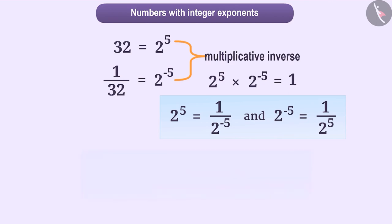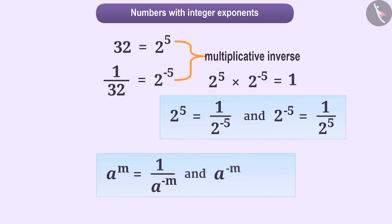Broadly, any number A to the power M can be expressed as 1 upon A to the power minus M, and the number A to the power minus M as 1 upon A to the power M.